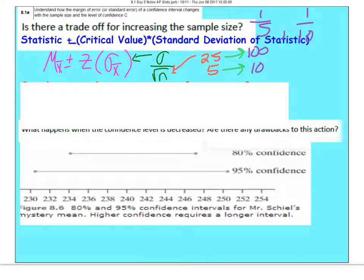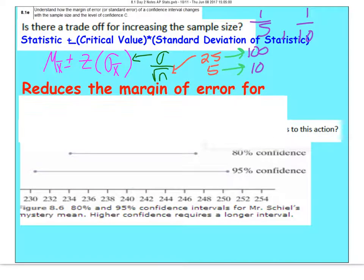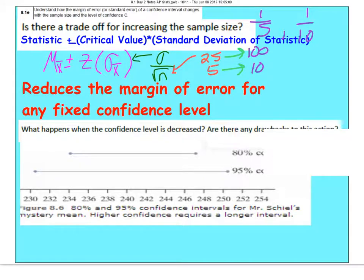If you take a larger multiple versus a smaller multiple, in this case, your margin of error is going to be reduced as your sample size increases. So what we can say is it reduces the margin of error for any fixed confidence interval. That should make sense, folks. Remember, we've always talked about as you increase your sample size, data becomes less variable. If data is less variable, it means your amount of error is going to be minimized.